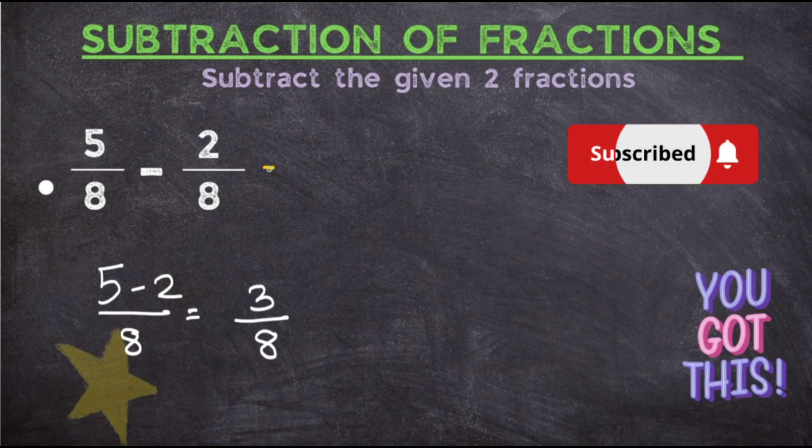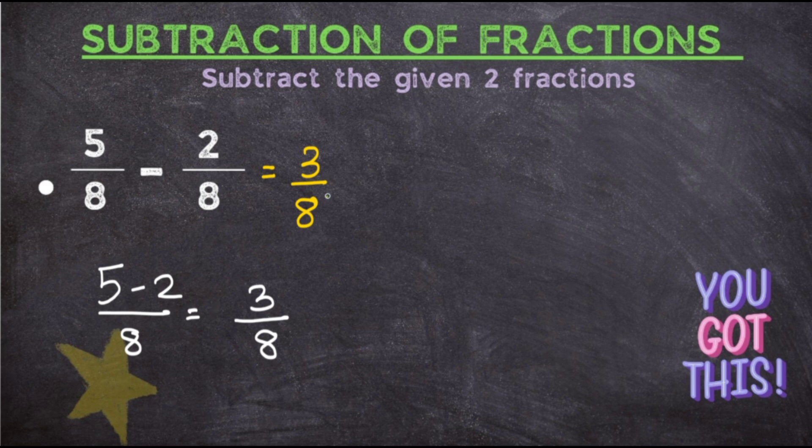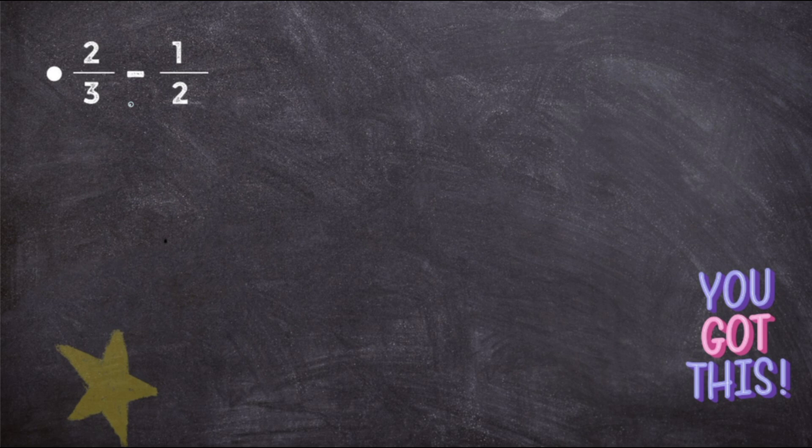So your answer for 5 upon 8 minus 2 upon 8 will be 3 upon 8. Now this fraction is already in the simplest form, so you don't have to convert it into the simplest form.